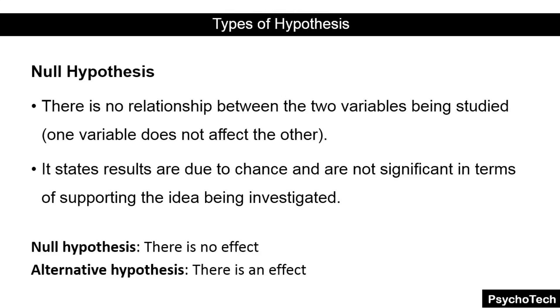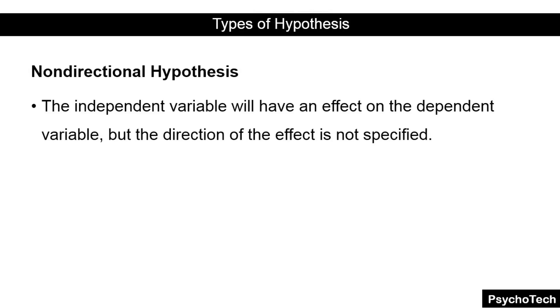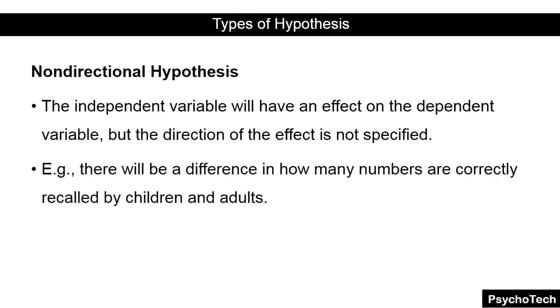Next we have the non-directional hypothesis. A two-tailed non-directional hypothesis predicts that the independent variable will have an effect on the dependent variable, but the direction of the effect is not specified. For example: there will be a difference in how many numbers are correctly recalled by children and adults.